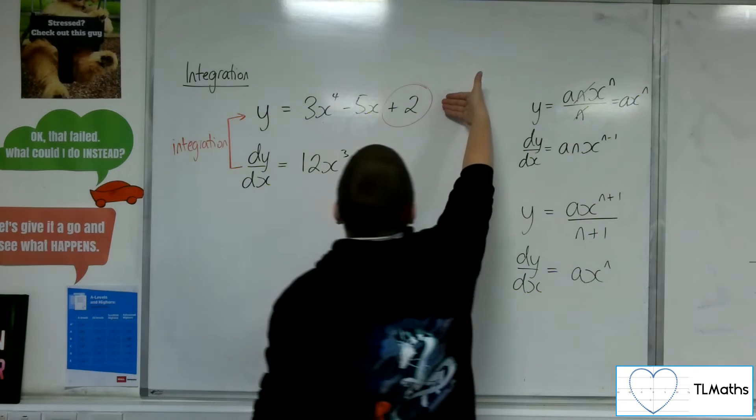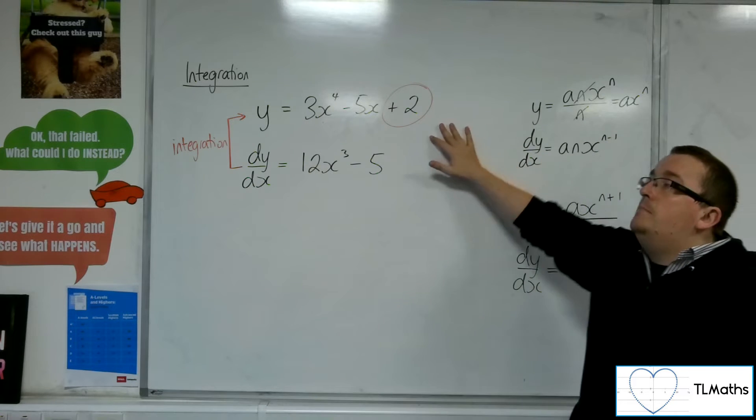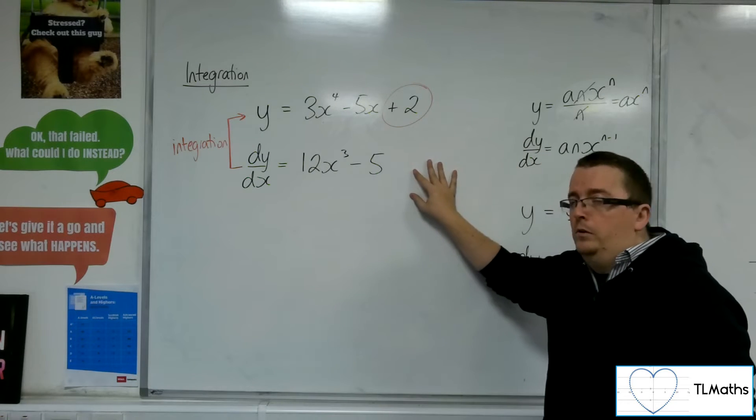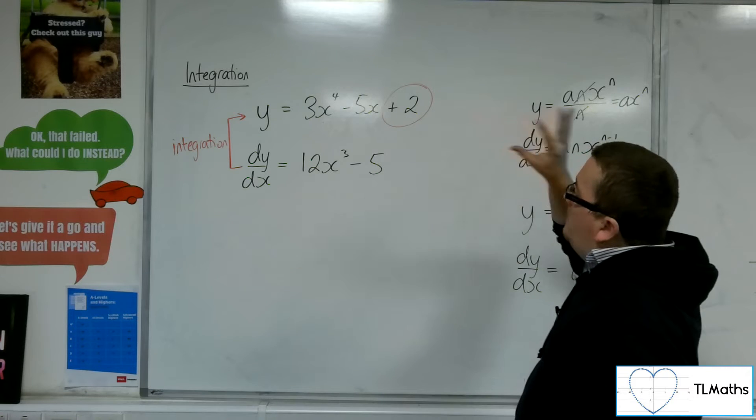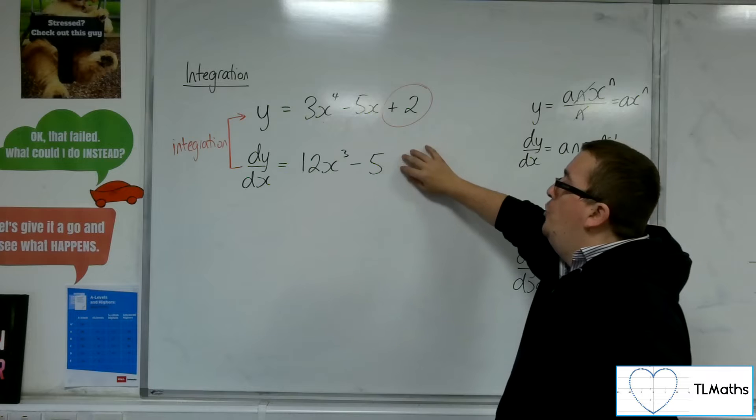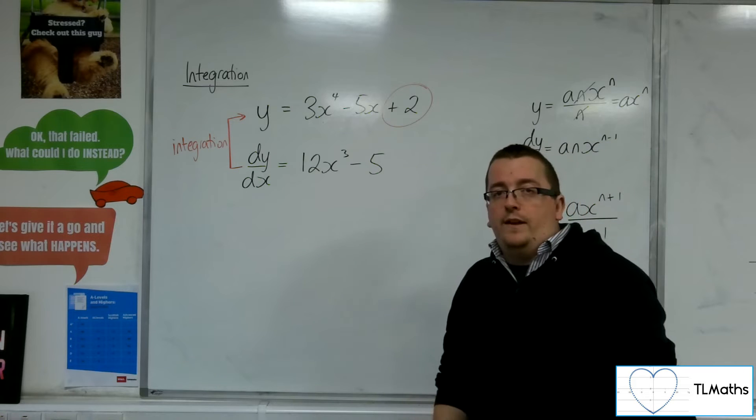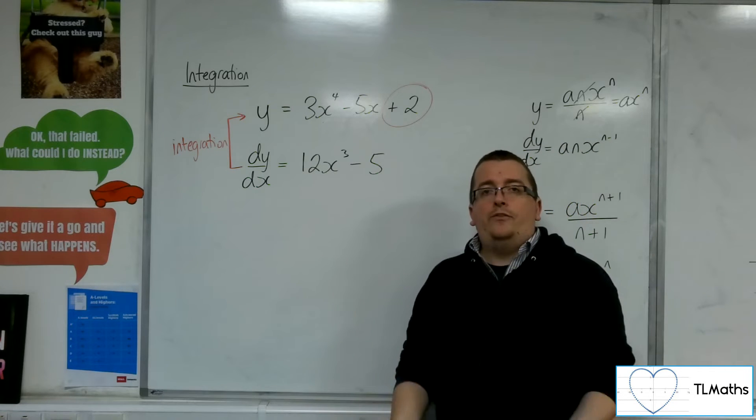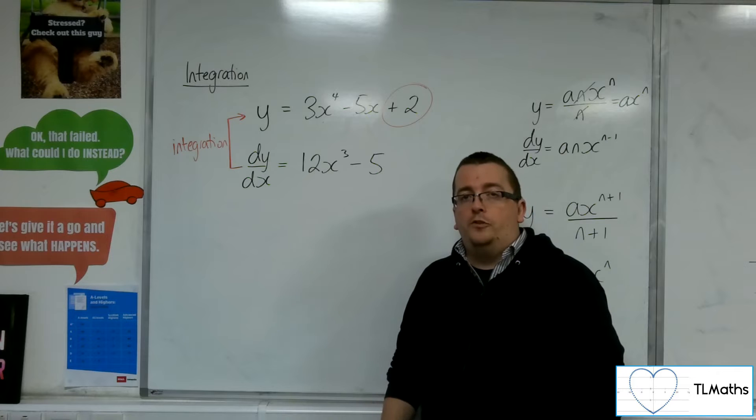So when you differentiate, information gets lost. That plus 2, that bit of information there, disappears. And there's no way to retrieve it unless I have some other bit of information told to me.